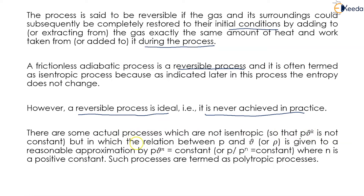There are some actual processes which are not isentropic, so that PV^k is not constant, but in which the relationship between P and V or density is given to a reasonable approximation by P·V^n = constant, or P/ρ^n = constant, where n is a positive constant. Such processes are termed as polytropic processes.